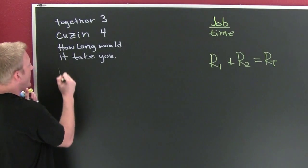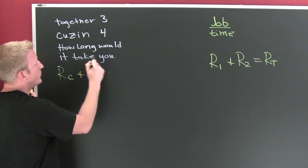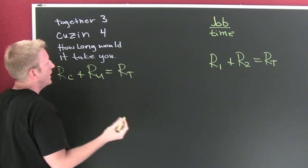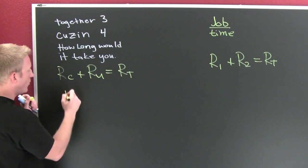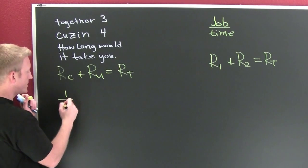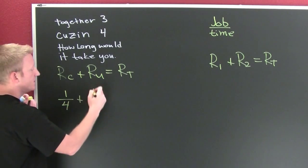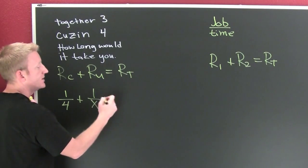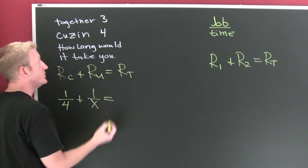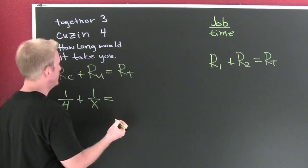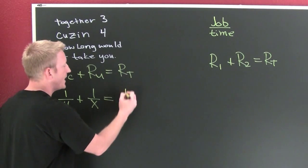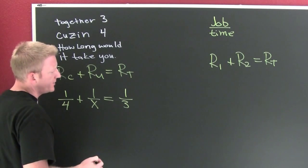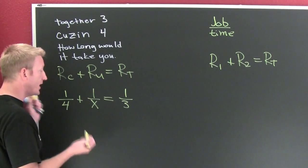We're going to have rate cousin plus rate you equals rate total. So we're talking about one cabinet - your cousin does it in four hours, plus do you know how long it takes you to do it? No, you don't. Let's call it X. That's what we're trying to find out. But you do know if you and your cousin were working together, it would take three hours. I don't know how long it would take me to finish cabinets, but I think my cousin's pretty good.